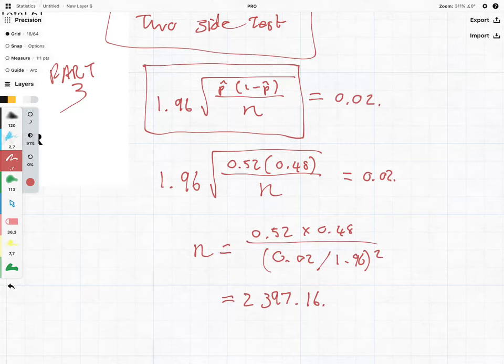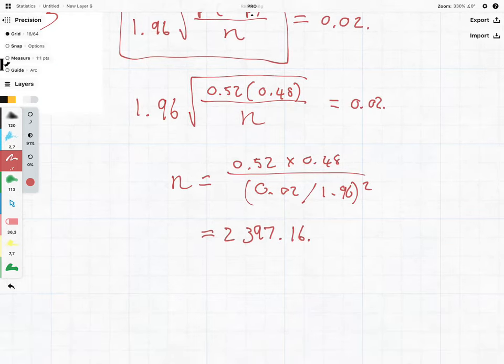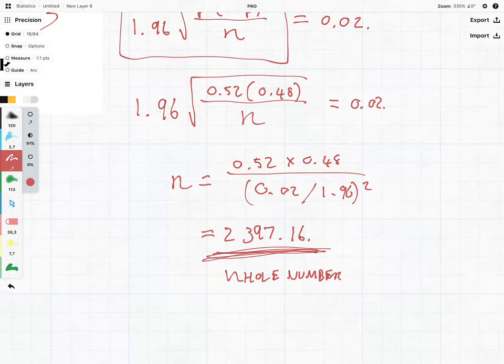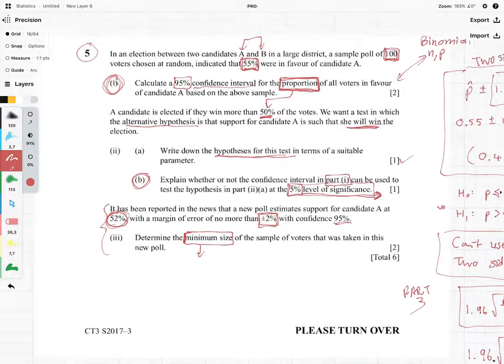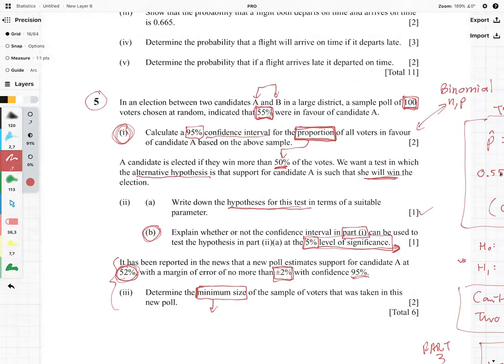And like I said, it's a sample size, we can't leave it like that. It needs to be a whole number because remember this number represents people and you don't get 0.16 of a person, which means our sample size should be 2398. So 2398 people is going to be the minimum sample size we need in order to fulfill this criteria, and yeah there we're done.